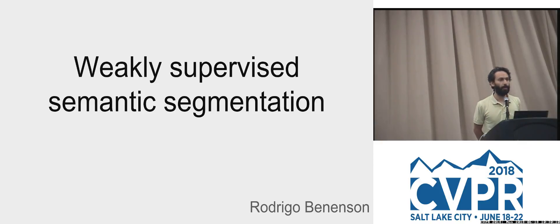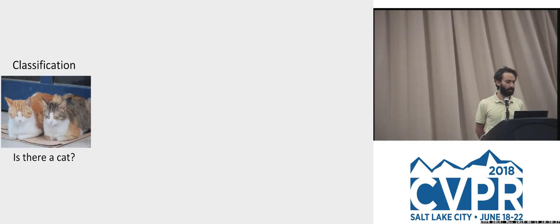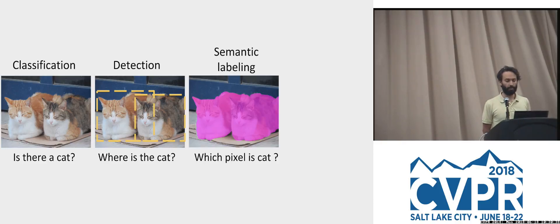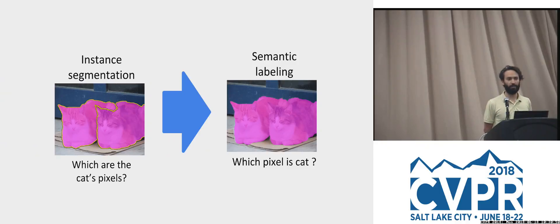All right, we will get going. Thanks everyone for coming, for joining us this morning. I'm going to talk about weak supervision but for semantic segmentation — a different application domain. We talk about classification where you want to know if there's a cat in the image, detection where you want to localize it with a bounding box, and now we're talking about which pixels are cat — that would be semantic labeling.